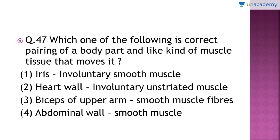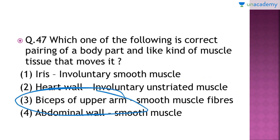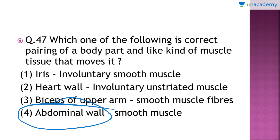Question number 47: which is the correct pairing of a body part and the kind of muscle tissue that moves it? The right answer is option number one — the iris contains involuntary smooth muscle, which cannot be controlled by your will. The heart wall contains involuntary striated muscles, the biceps of the upper arm contain skeletal muscle, and the abdominal wall contains oblique muscles.